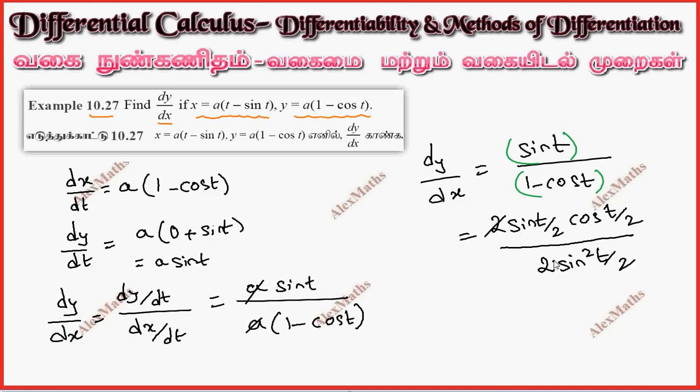Now the 2's cancel, sin(t/2) squared cancels, giving cos over sin which is cot(t/2). So wherever possible, simplification is done.